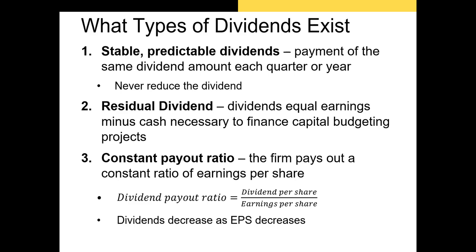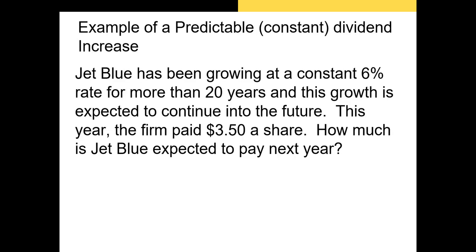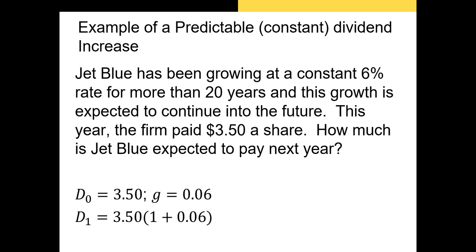Let's look at a couple of simple examples. In this first example, JetBlue has been growing its dividends at a constant 6% rate for more than 20 years, and this growth is expected to continue. This year, the firm paid $3.50 in dividends per share. How much is JetBlue expected to pay next year? Our D0 is $3.50, and our growth rate is 6%. So D1 equals $3.50 times 1.06, which gives us an expected dividend of $3.71 next year.